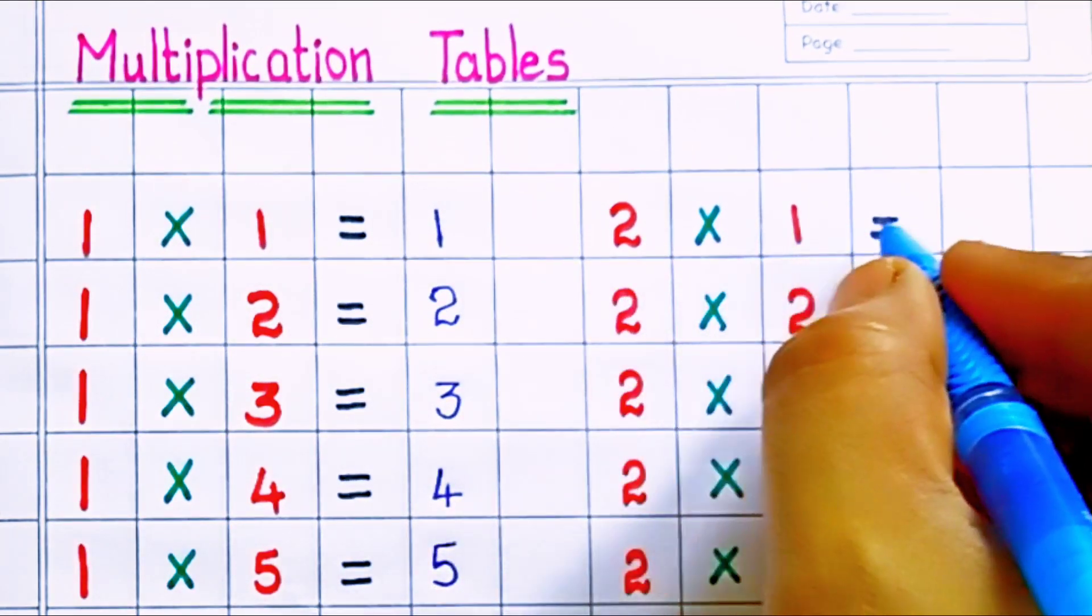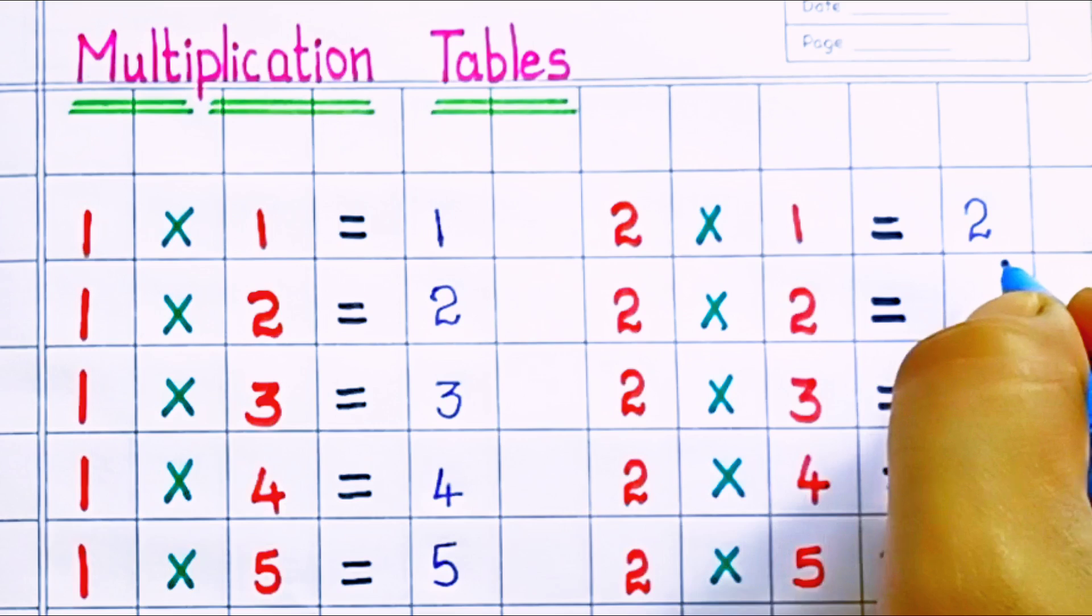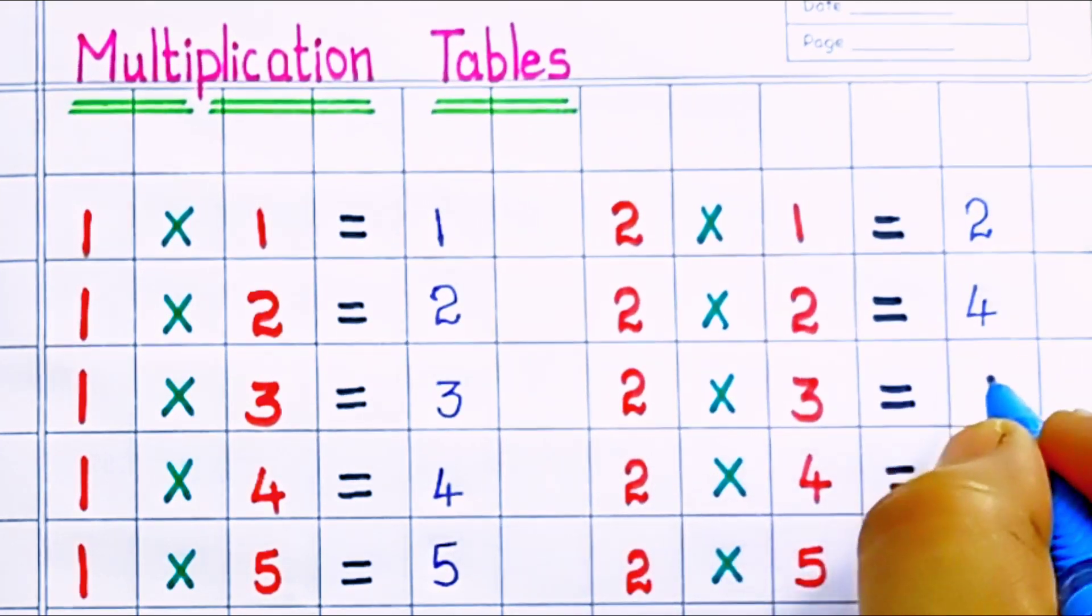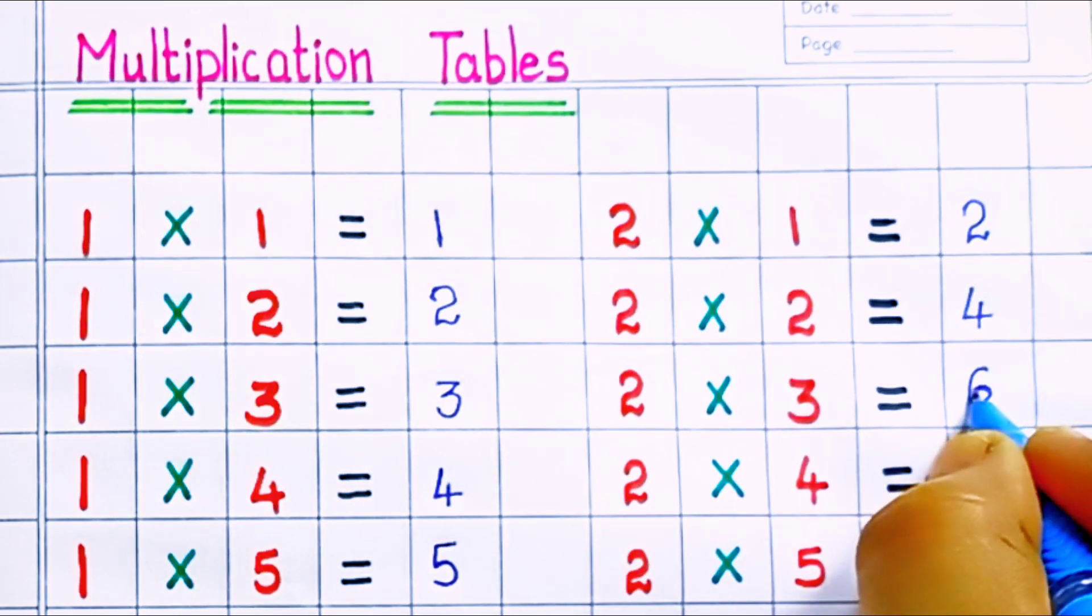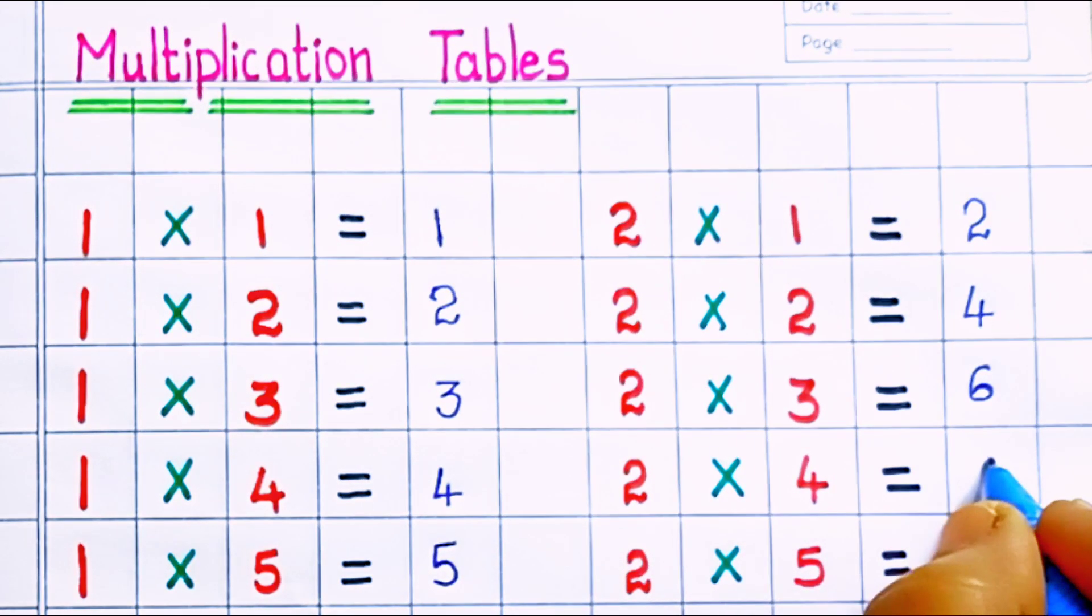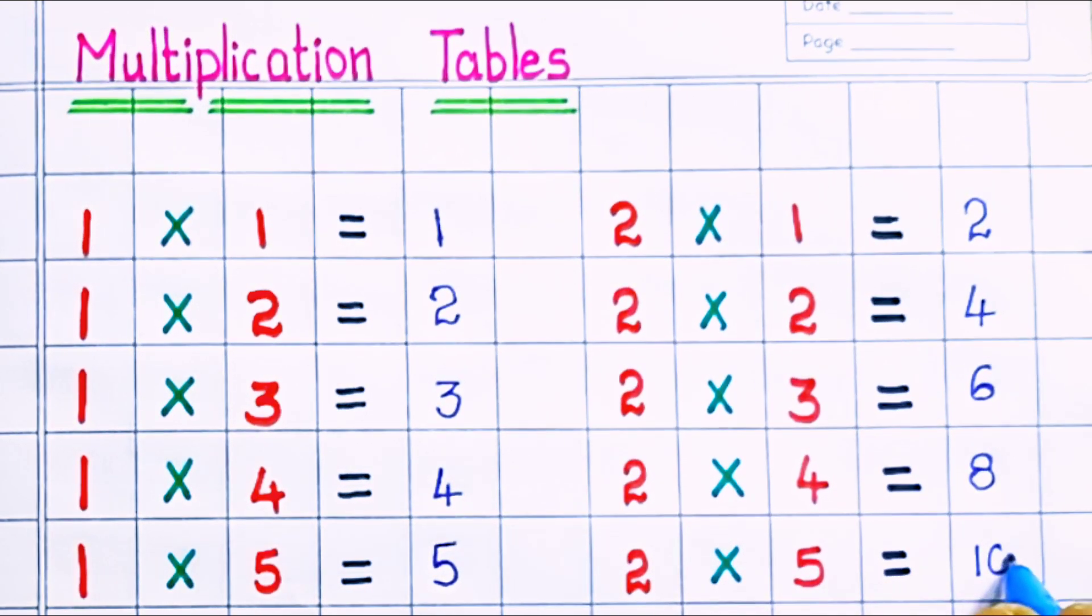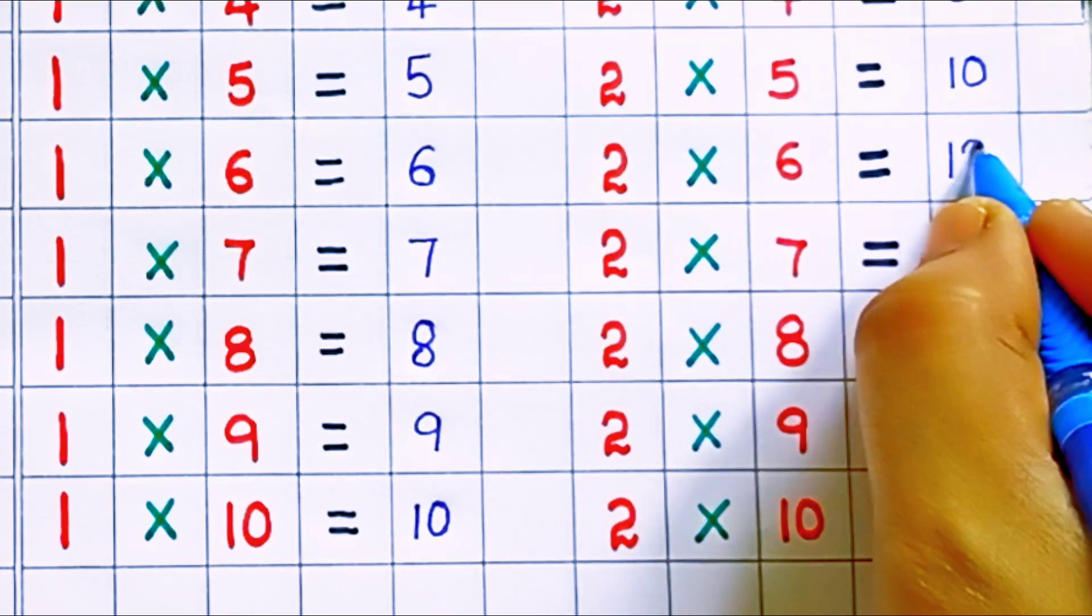And now let us learn the table of 2: 2 times 1 equals 2, 2 times 2 equals 4, 2 times 3 equals 6, 2 times 4 equals 8, 2 times 5 equals 10.